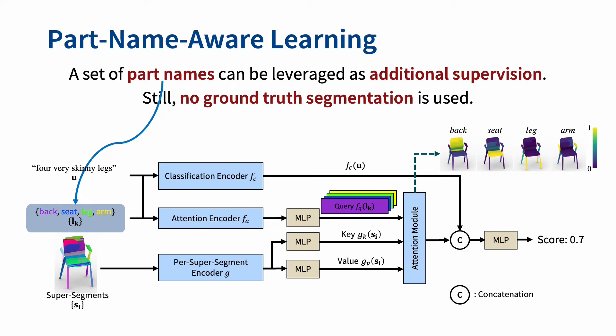If a set of predefined part names is given in the training, PartGlot can leverage this as additional supervision, which we call part name aware learning. Here, the attention maps are computed for all the part names and normalized over them. Then the attention map of the part name including the input utterance is used for the target shape classification.